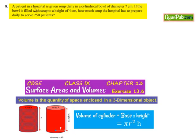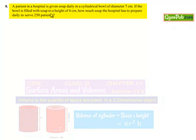Moving on to 8th question, a patient in a hospital is given soup daily in a cylindrical bowl of diameter 7 cm. If the bowl is filled with soup to the height of 4 cm, how much soup the hospital has to prepare daily to serve 250 patients?